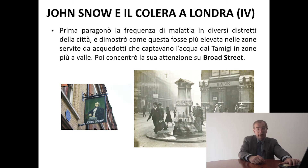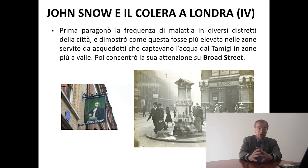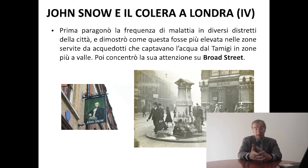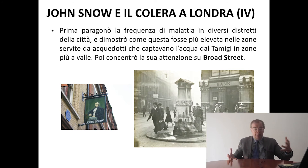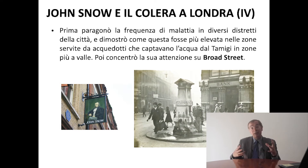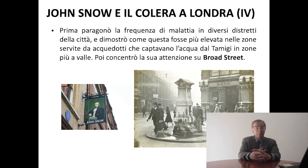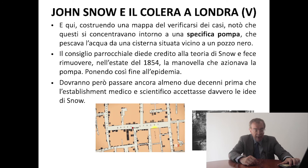Analizzando la situazione specifica a Londra, Snow arrivò alle sue dimostrazioni più convincenti. Paragonò la frequenza di malattia in diversi distretti della città, facendo un'analisi comparativa dei dati, e dimostrò come la frequenza fosse molto più elevata nelle zone servite da acquedotti che captavano l'acqua del Tamigi a valle — dove finivano i liquami scaricati a monte — rispetto alle zone che pescavano l'acqua a monte.